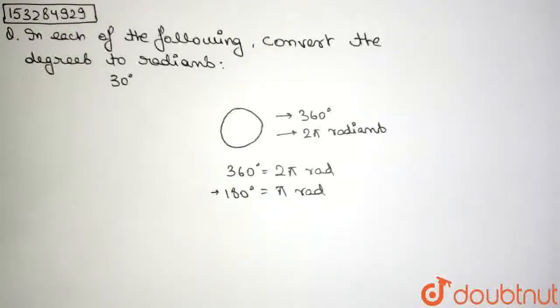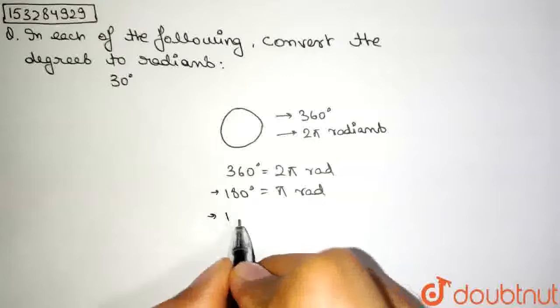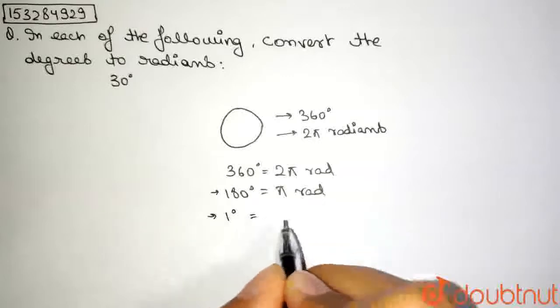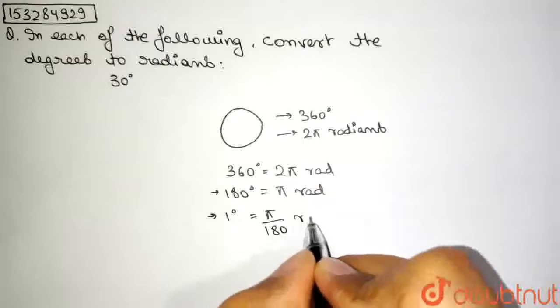If we divide both sides now by 180, what do we get? 1 degree is equal to π by 180 radian.